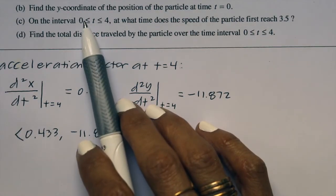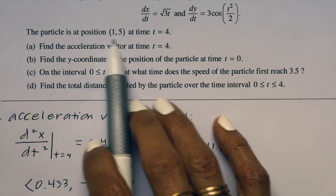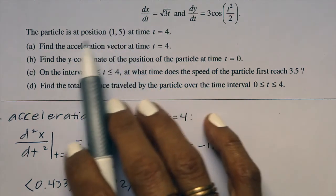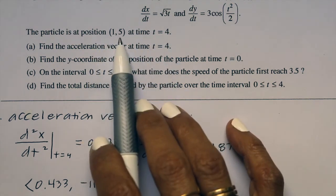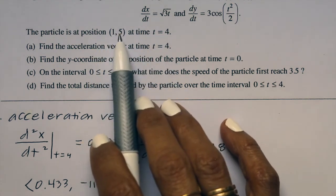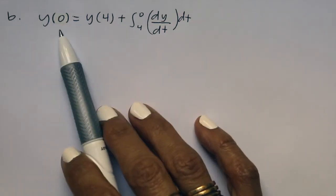Part b says find the y coordinate of the position of the particle at time t equals 0. We're going to use this initial condition. It says the position of the particle when t equals 4 is (1, 5), so the y coordinate is 5 when time t equals 4. So I set it up: y of 0 is what we're trying to find.